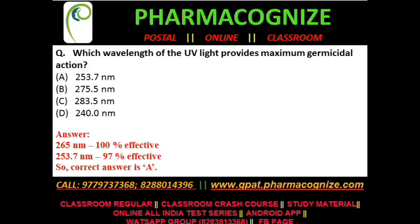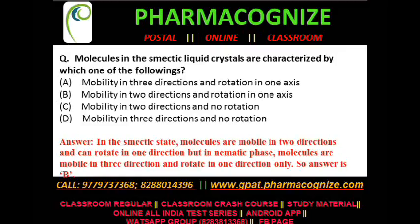Question 4: which wavelength of UV light provides maximum germicidal action? Option A is 253.7 nm, Option B is 275.5 nm, Option C is 283.5 nm, and Option D is 240 nm. The correct answer is A — 253.7 nm — because 265 nm is 100% effective UV light and 253.7 nm is 97% effective. Since 265 nm is not given in the options and 253.7 nm is, our answer will be A.